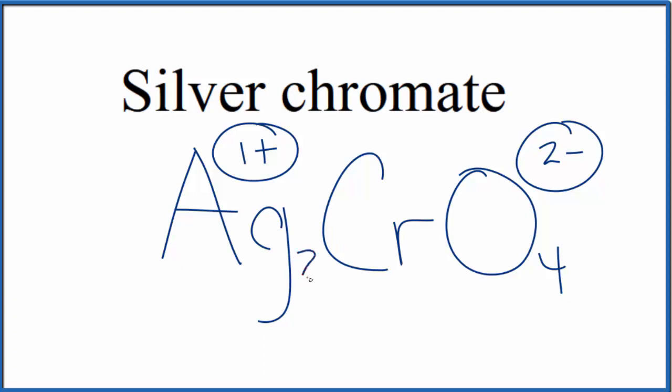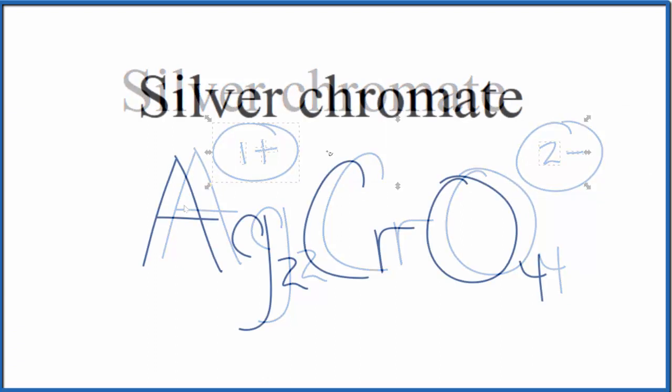So if we had two of these silver ions, 2 times 1+, that would balance out the 2-, we'd have a net charge of 0. So this is the formula for silver chromate, Ag2CrO4.